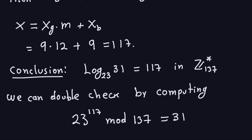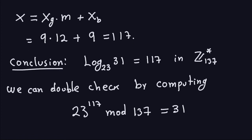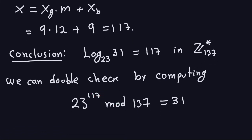You can verify the answer: 23^117 mod 137 should equal 31. If you compute this, you will get 31. If you don't get that number, it means you made a mistake somewhere in the algorithm. This is an example of computing the discrete log using the baby step giant step algorithm. In the next video, I'll give another example where the modulus is not prime but still allows the group to be cyclic.